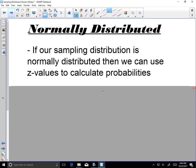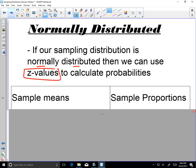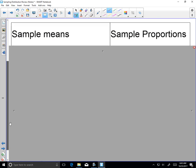Now, the next thing that we have to verify is that we have a normally distributed sampling distribution. Because if our sampling distribution is normally distributed, then we can use z-values going back to our normal distribution work that we did in our last unit. So if our sampling distribution is normal, then we can use z-values.